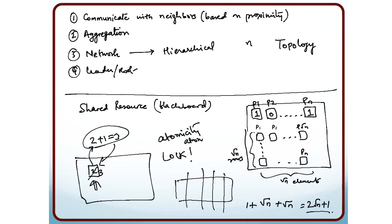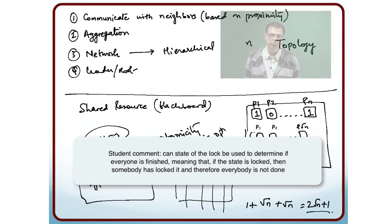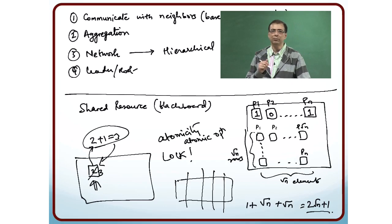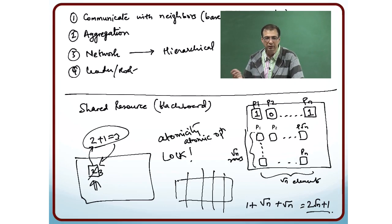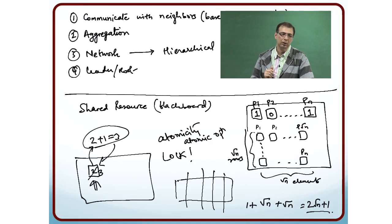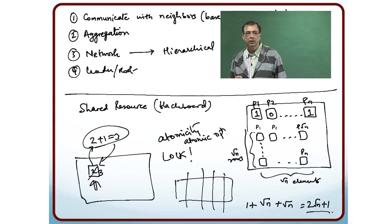Or you are trying to perform an atomic operation — the memory location is not changed while the update is taking place. While all those operations are being completed, nobody else is touching the memory, so you are doing it atomically. Between the two locks there is a momentary unlocked period — when one processor unlocks it and before the other locks it, it is briefly in the unlocked state — so that cannot be used to determine whether processing is finished or not.